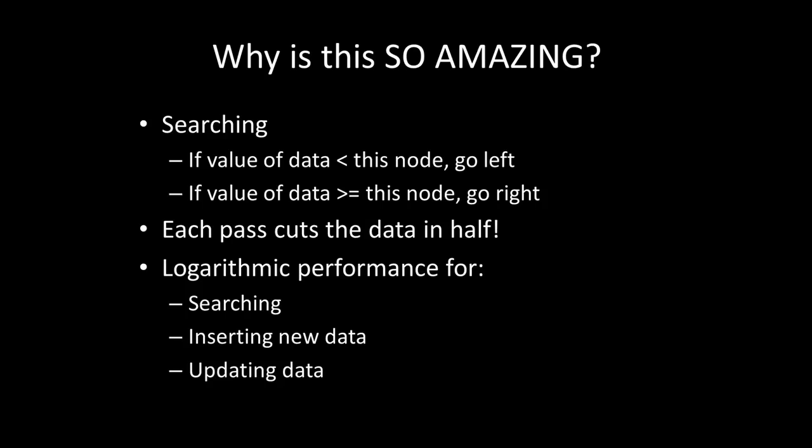So you may be asking yourself, what's the big deal? Well, as we're searching, if the value of the data is less than this node, then we're going to go left. If the value of the data is greater than or equal to this node, then we go right. Now as we go through searching, each pass is going to cut the amount of data that we have to search through in half. Therefore, we're going to have logarithmic performance for searching and inserting new data and updating that data.